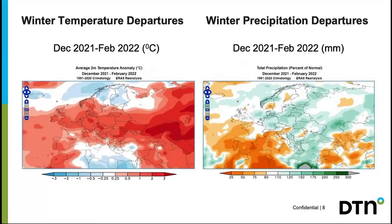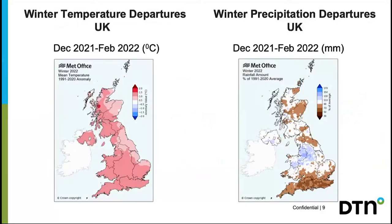No surprise then that winter overall was warmer than average across most of Europe, aside from Finland and northern Scandinavia. Parts of the Mediterranean were cooler than normal, but there was a lot of mild to warm weather. It was also dry in the southwest, with the storm track across northeastern and eastern Europe. The UK had its eighth mildest winter on record dating back to the late 19th century. It was generally wet around the storm track, though January became drier as high pressure built farther north before a much wetter and windier February.